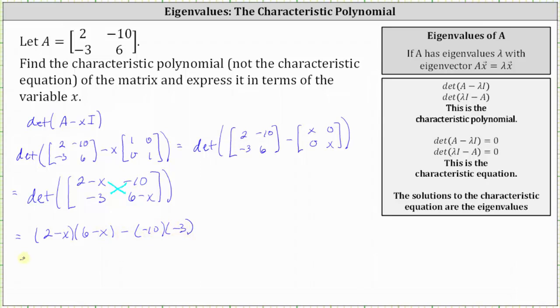Let's multiply the two binomials. Two times six is 12. And then we have two times negative x, which is negative 2x. And then negative x times six, which is negative 6x. Negative 2x minus 6x is negative 8x, giving us minus 8x. Then we have plus x squared.